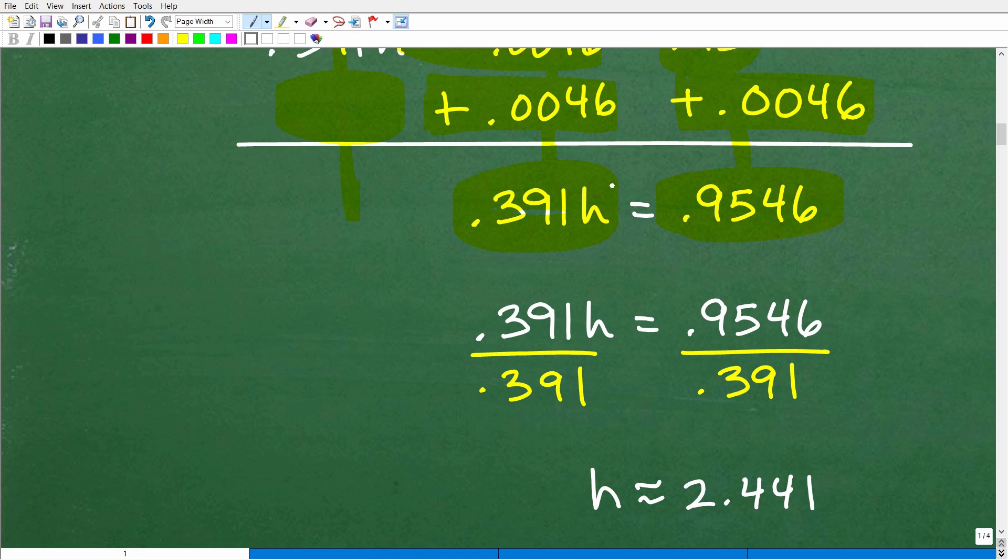Okay, so now we have 0.391h is equal to 0.9546. So how do we solve for h? Easy. We're just going to go ahead and divide both sides of the equation by this 0.391. So we get our calculators out, and we got 0.9546 divided by 0.391, and that's going to be approximately 2.441. So that is what h is equal to.